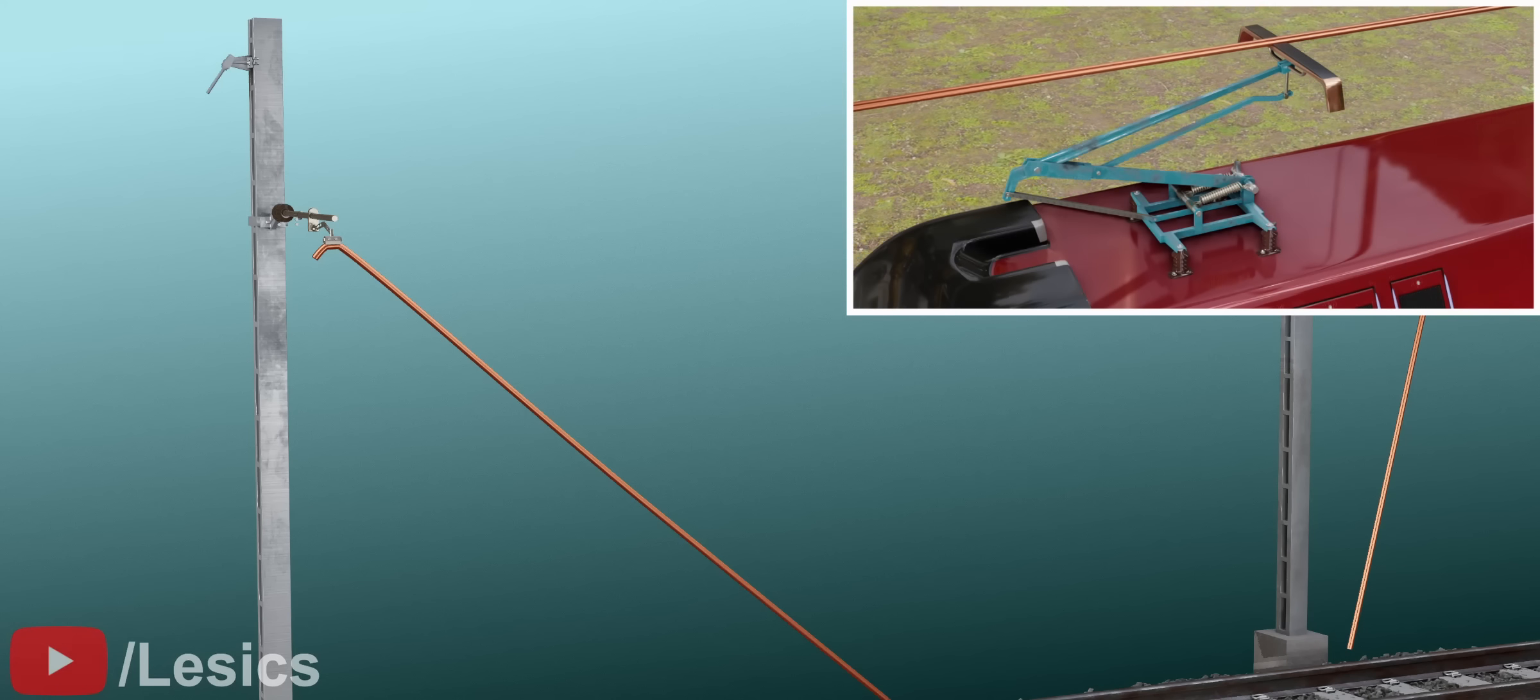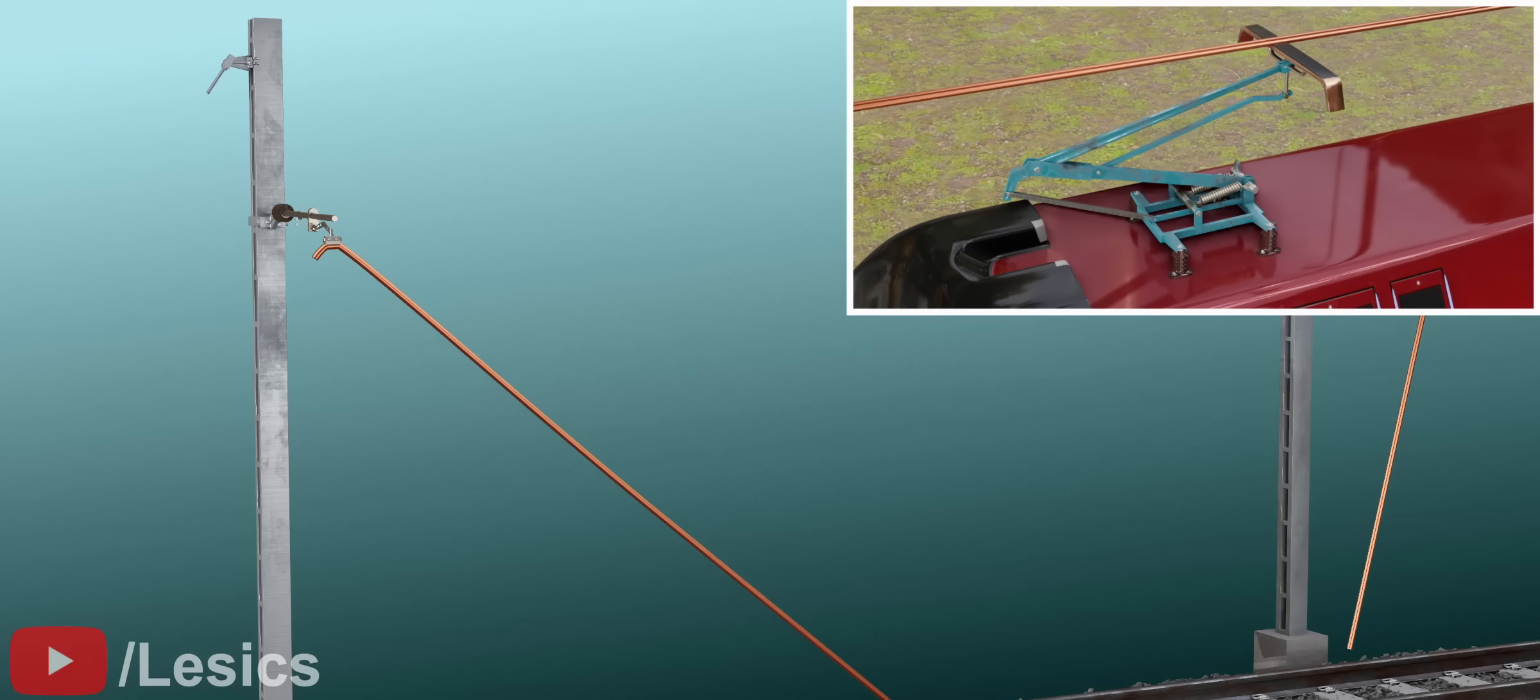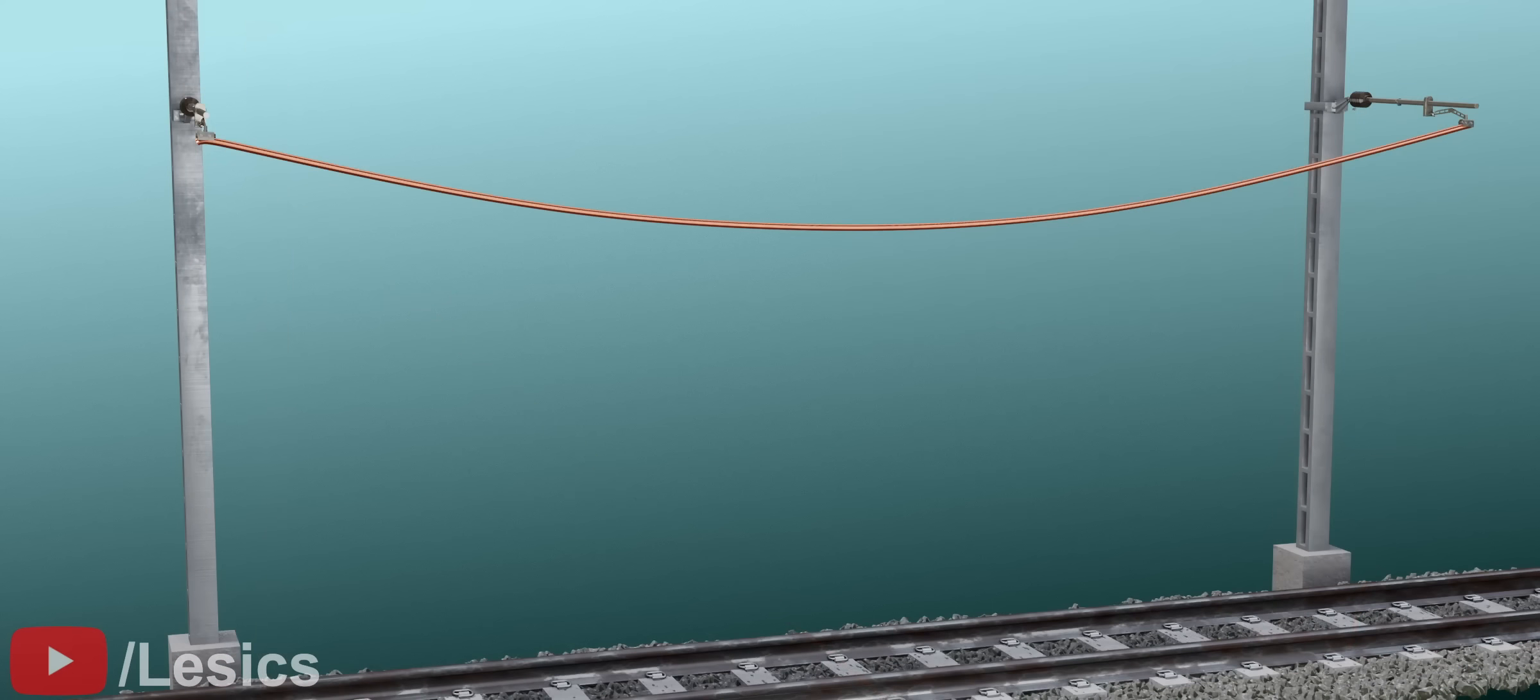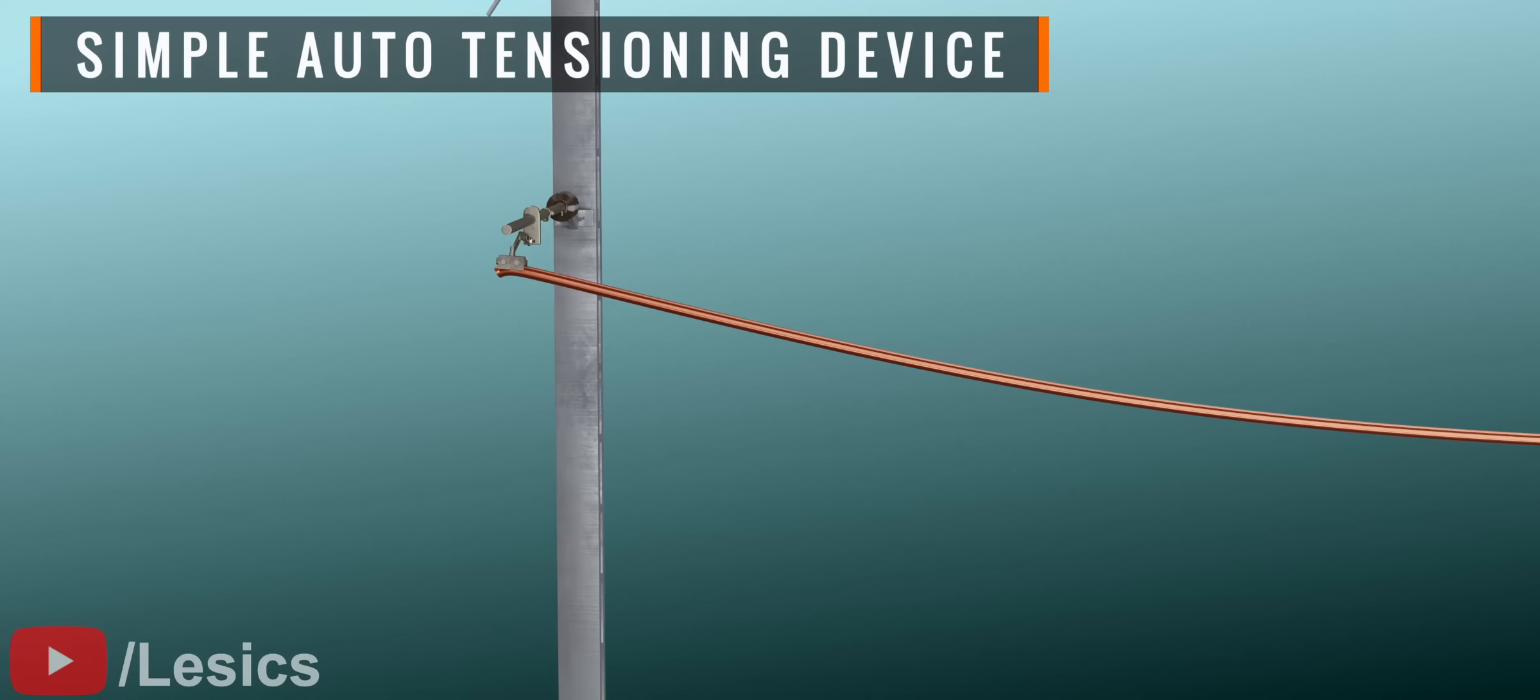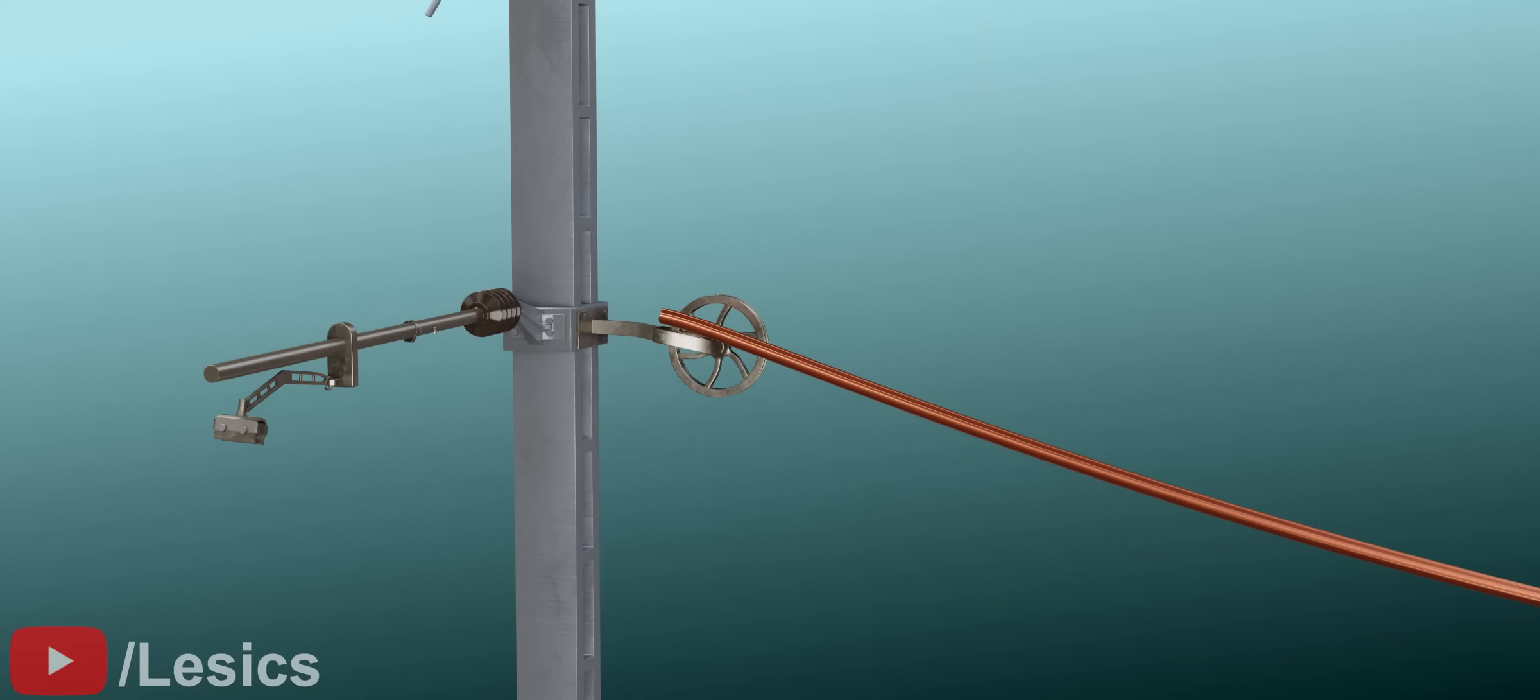An ideal overhead equipment setup should always keep the contact wire perfectly straight without breaking the wire. Let's see how we can achieve this. First, we must design a simple system to take care of this expansion and contraction problem. In this design, we are replacing a fixed connection with a pulley.